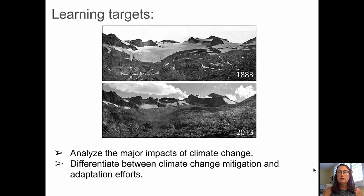I want to call your attention, first of all, to this picture. We see a before and after picture here — one from 1883, showing a glacial front coming down mountains in Alaska, and the same shot from 2013. And I think you can clearly see how much this glacier has melted back.